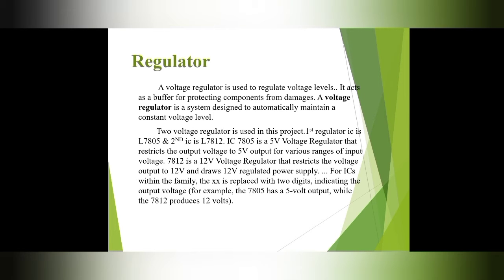Regulator: this is used to regulate voltage levels. It acts as a buffer for protecting components from damage. A voltage regulator is a system designed to automatically maintain a constant voltage level. Two voltage regulators are used in this project: the first is L7805 and the second is L7812. IC 7805 is a 5-volt voltage regulator that restricts the output voltage to 5 V for various ranges of input voltage.